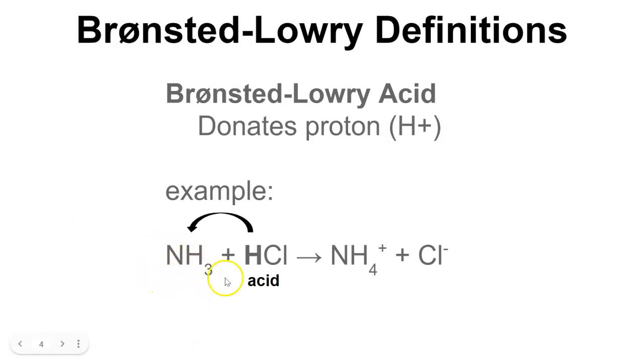So for example, we have NH3 plus HCl, that's the acid. It will yield NH4, which is ammonia, plus a chloride anion. So this acid has donated its hydrogen to the NH3, and because this is the donor, donating the hydrogen, we know that it is the acid.